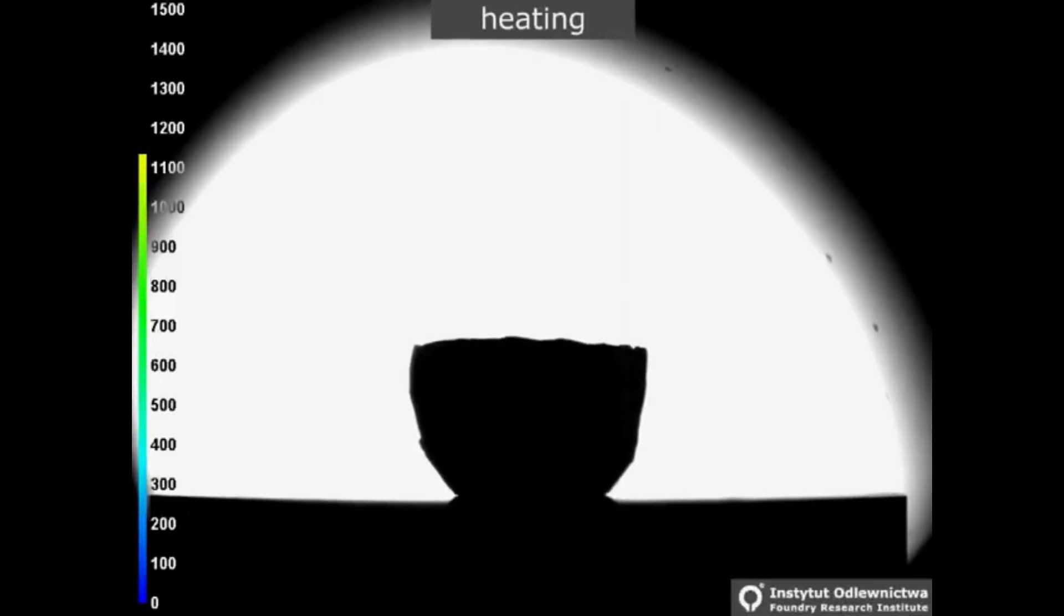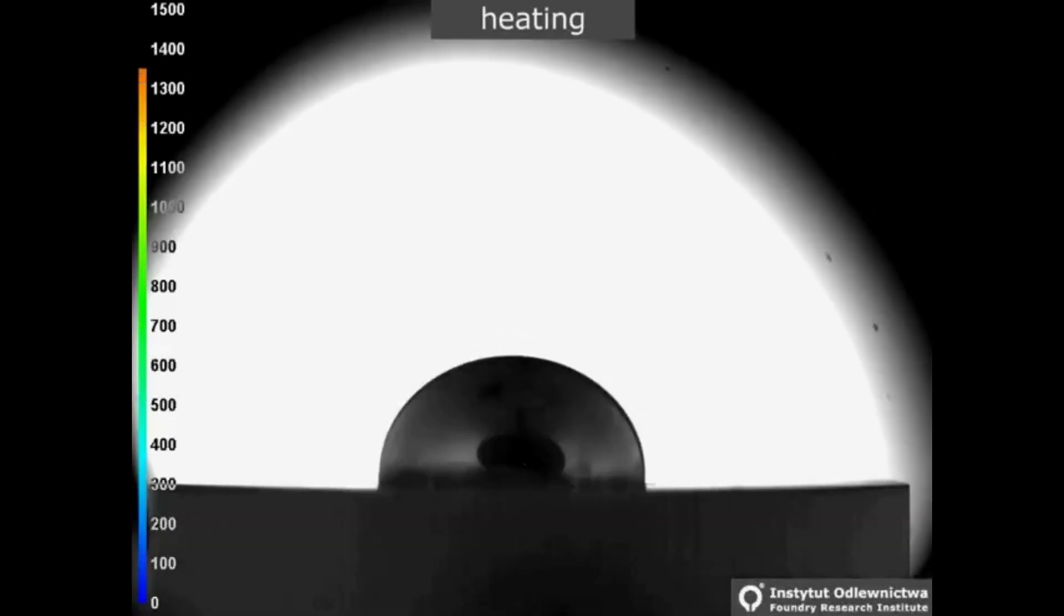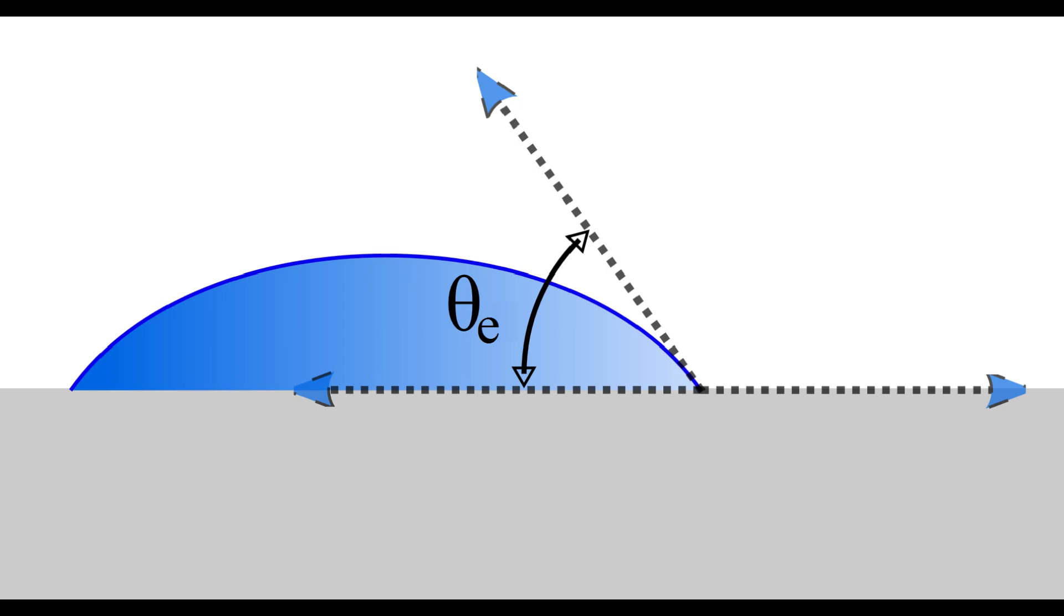Wettability is the ability of a solid to reduce the surface tension of a fluid and thus making the fluid spread out more over its surface. It is measured by the angle the surface of a liquid makes with the surface of the solid at the separation point of the liquid and solid. This angle is called the equilibrium angle due to being the angle at which the surface energies are at equilibrium.